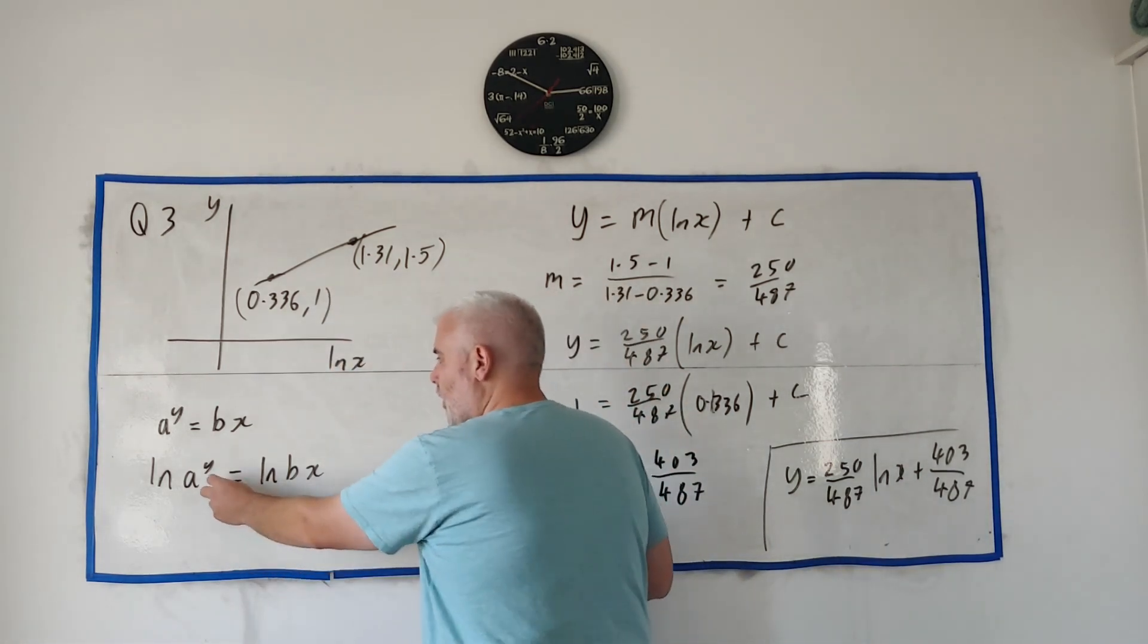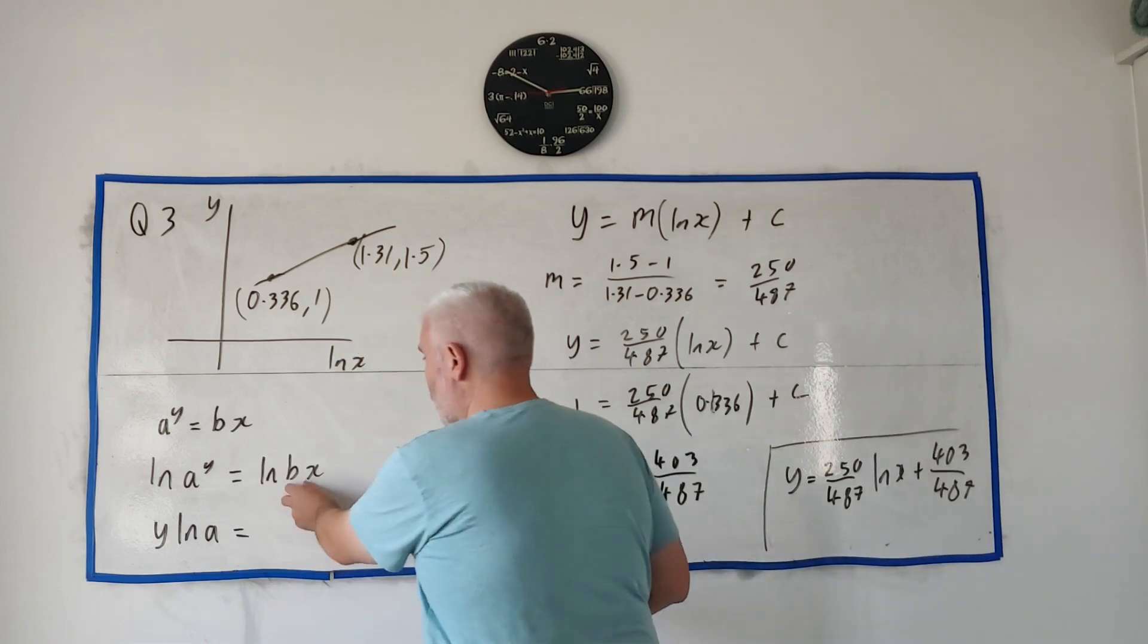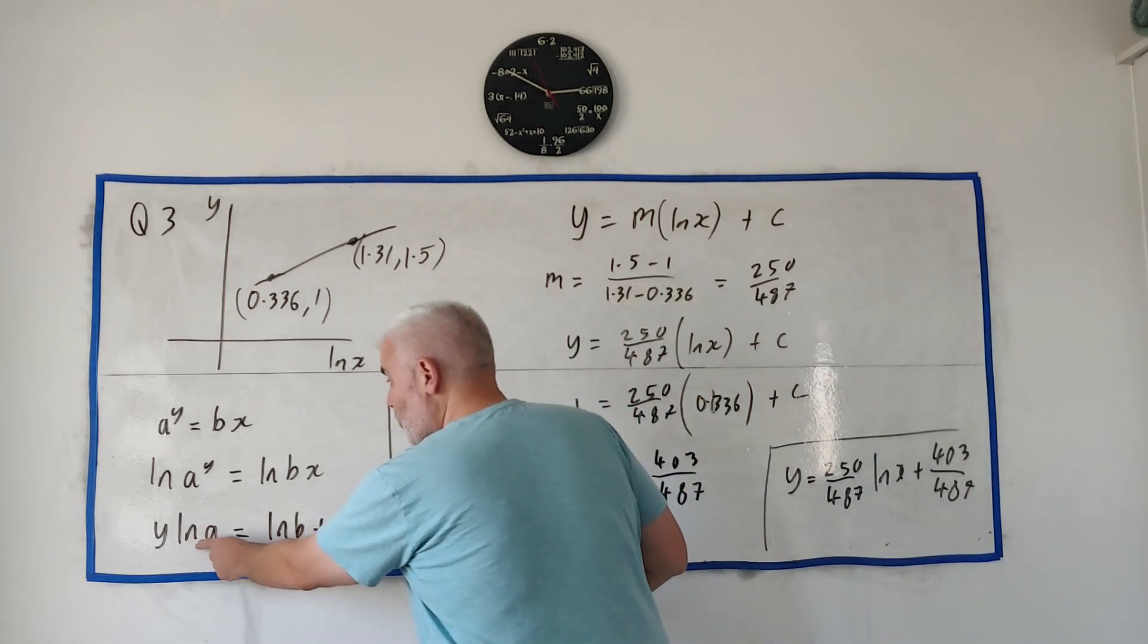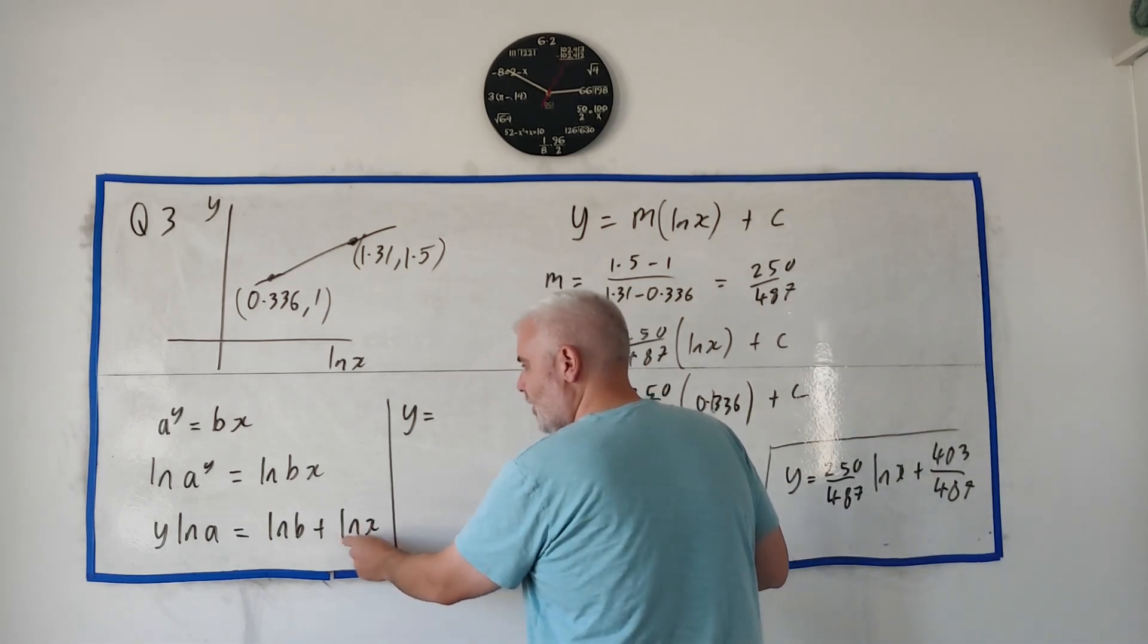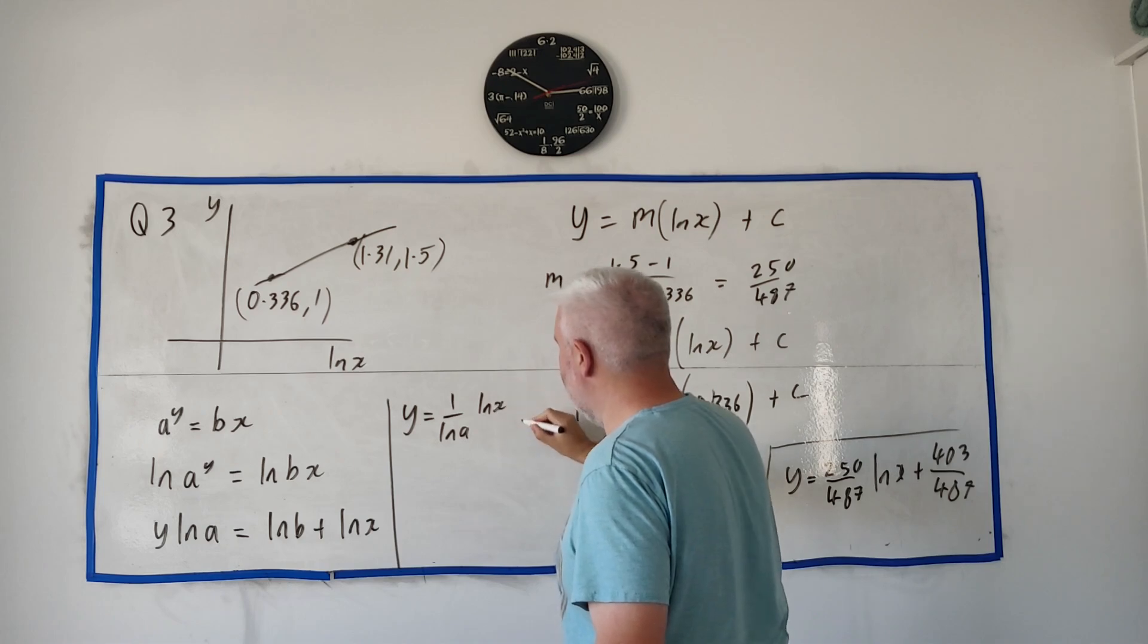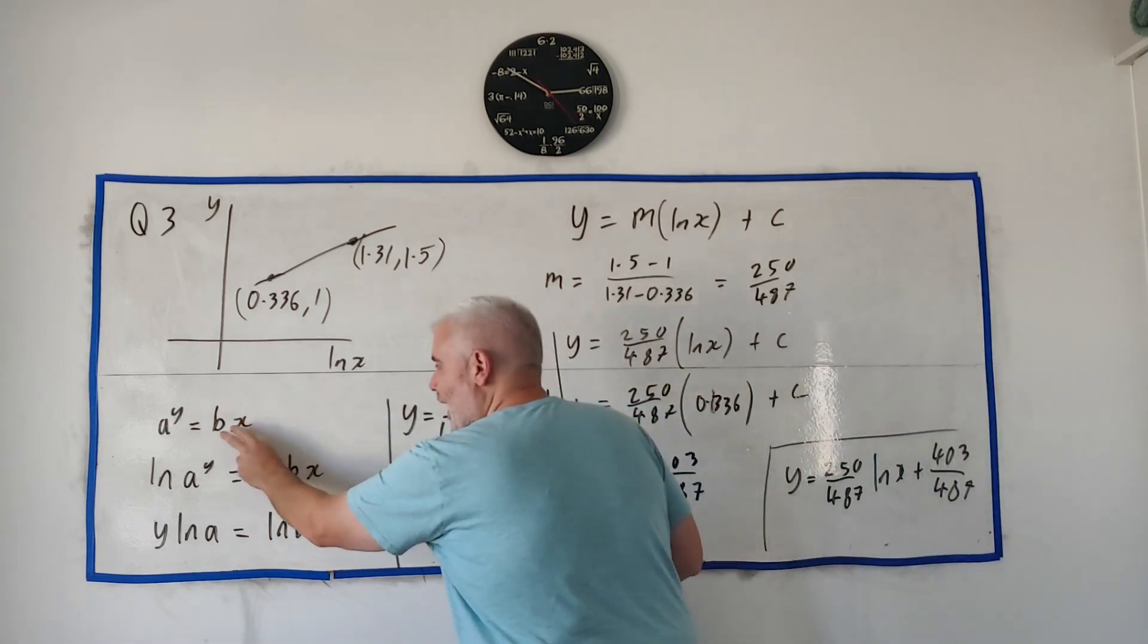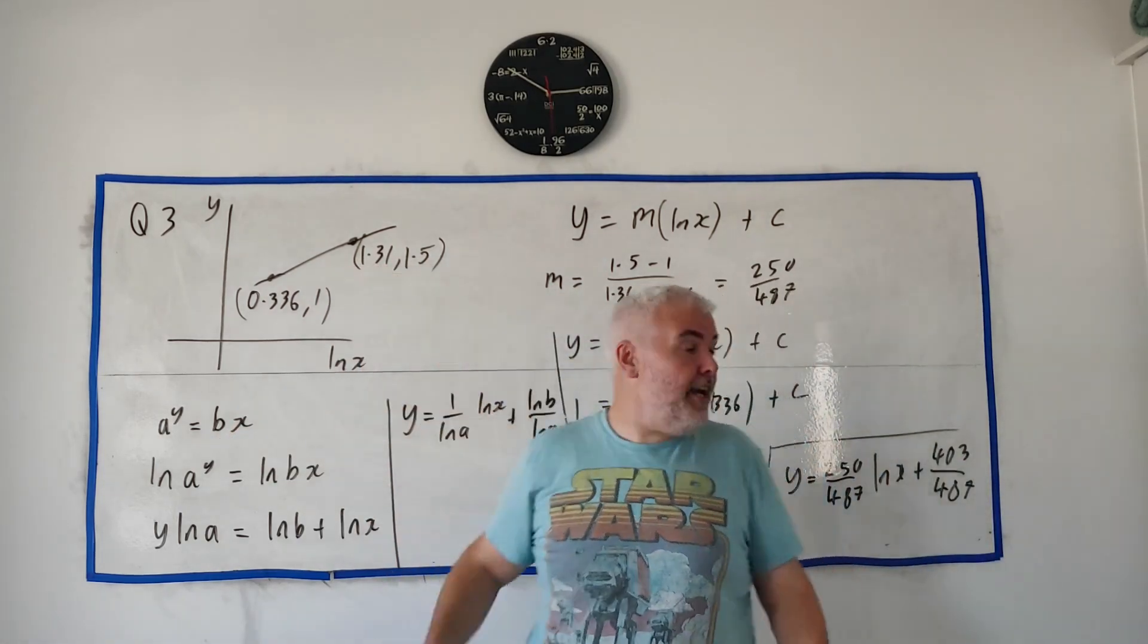I'll go ahead and use natural log. Natural log of ay on the left is equal to natural log of bx on the right. And we can use some rules for logs. One of the rules says this y can multiply out front. y natural log a. Another rule for logs says these can just be added. Natural log b plus natural log x. I can divide both sides by natural log a to get y is equal to 1 over natural log a natural log x plus natural log b divided by natural log a. Just by playing around with this equation, I got this one here. These are the same. I've just played around with both of them.